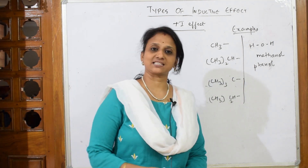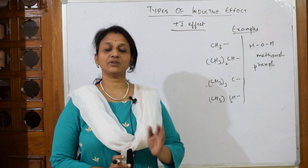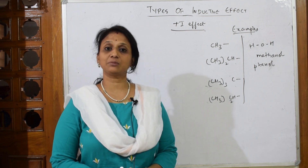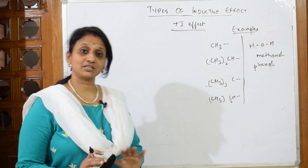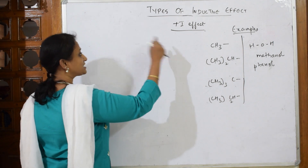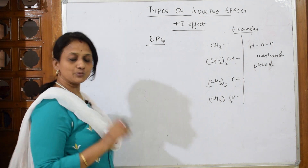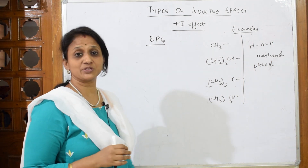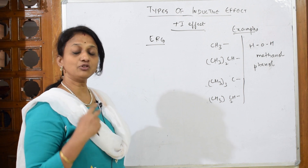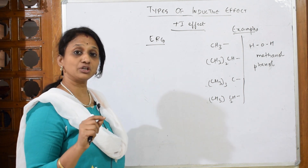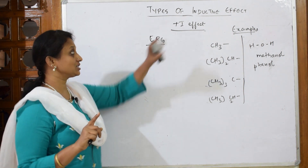Let's come back and learn about the +I effect. The -I effect should be clear — whenever acidic nature is given, you think about the electronegative atom. Now with the +I effect, the whole concept changes; it's opposite. In the +I effect, you speak about electron releasing groups only. You'll mostly see alkyl groups as electron releasing groups.